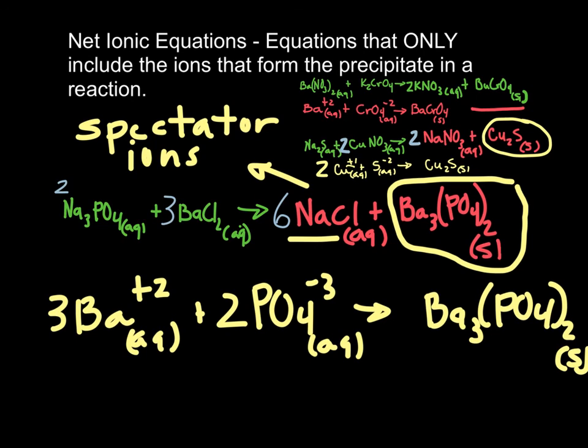Your take-home point here: net ionic equations are written to show only the ions that form a precipitate in a precipitation reaction. Also, spectator ions are the ions that do not form a precipitate. They literally don't play a part in the chemical reaction at all. We're going to work on this in class with a problem set tomorrow. And we will better refine your own skills on this. Have a great evening.